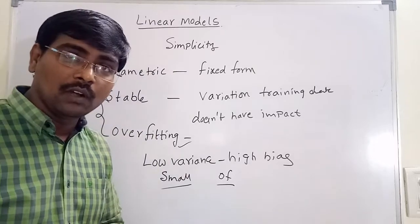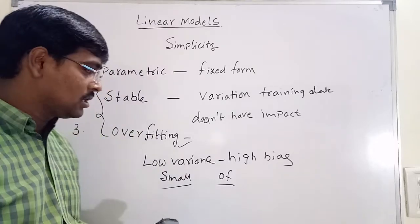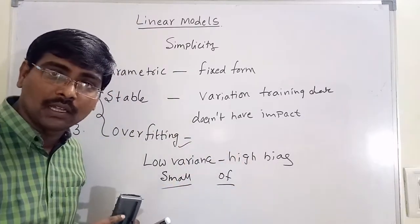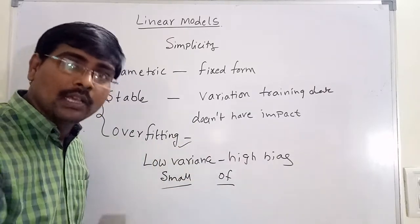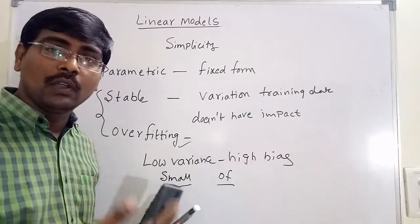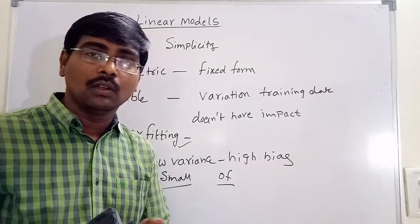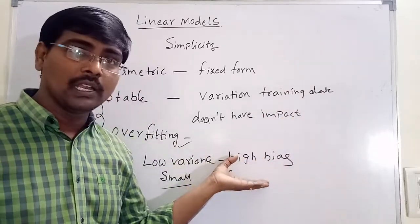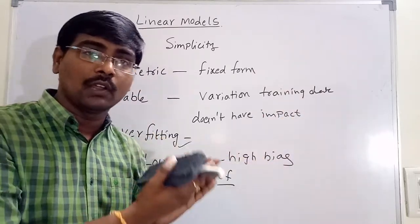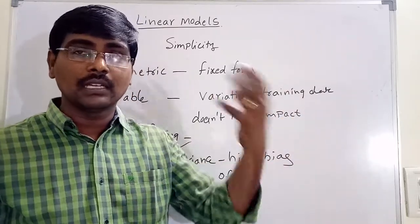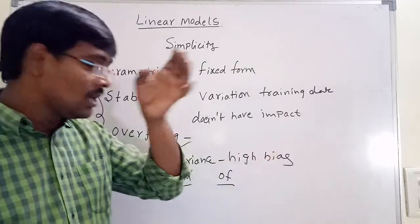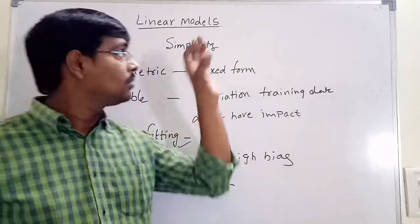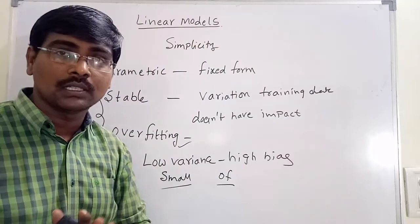Generally, what we do is start with this low variance and high bias linear model. If any elaboration is required, we can move to a further model. If it requires any modification or if the data size increases, then we automatically move to decision trees. These are the linear models.